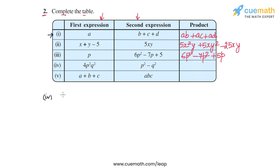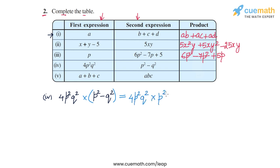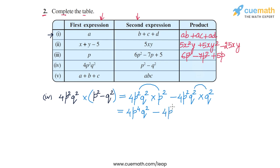In part four we multiply four p square q square, a monomial, with p square minus q square, a binomial. Applying the distributive law gives four p square q square into p square minus four p square q square into q square. For the first product, p square times p square gives four repetitions of p, so four p to the power four q square. In the second product, q square times q square gives q to the power four, so minus four p square q to the power four. The answer is four p to the power four q square minus four p square q to the power four.